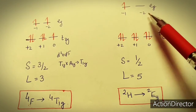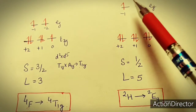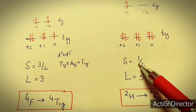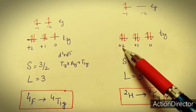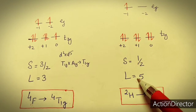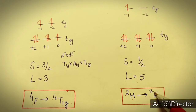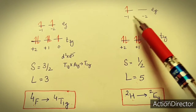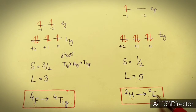In case of strong field complex, the electron arrangement is T2G⁶ and EG¹. Due to this configuration there is only one unpaired electron, so the spin becomes 1/2 and the multiplicity is 2. The L value calculates as: 2 + 2 + 4 + 1 + 5 + 1 + 6 − 1 = 5. If L = 5, the term is H, so the atomic term becomes 2H.